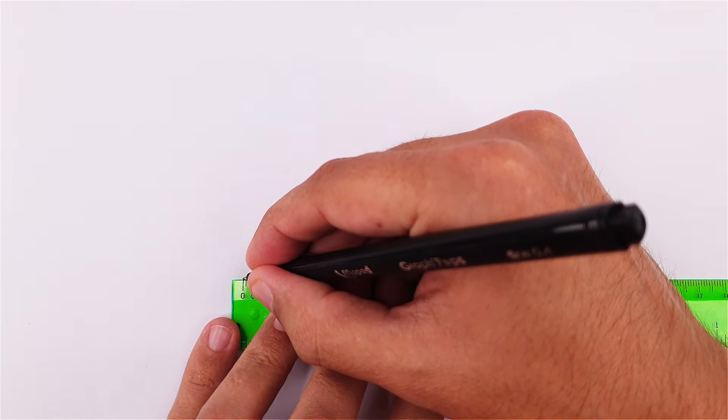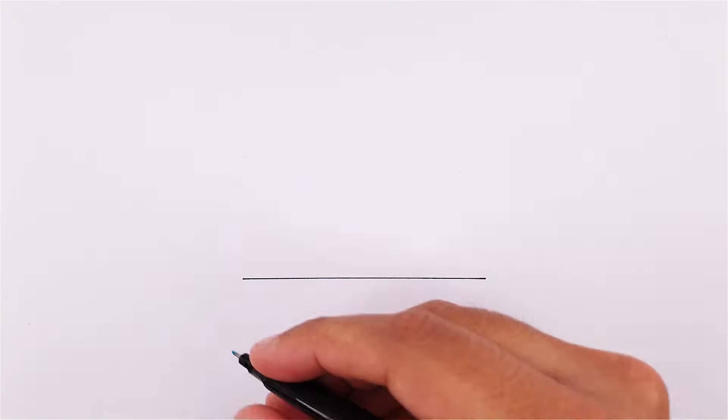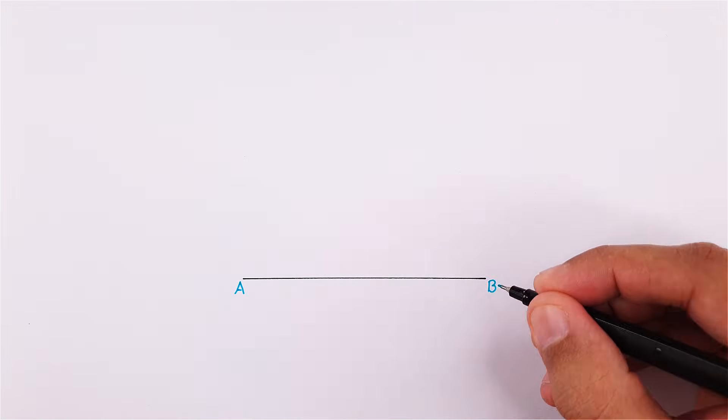In this video, we will draw a circumscribed circle of an equilateral triangle. Let's start by constructing our equilateral triangle using a side length of 90 mm.